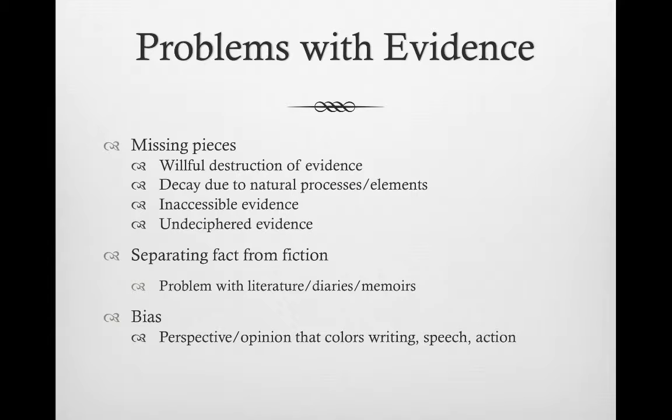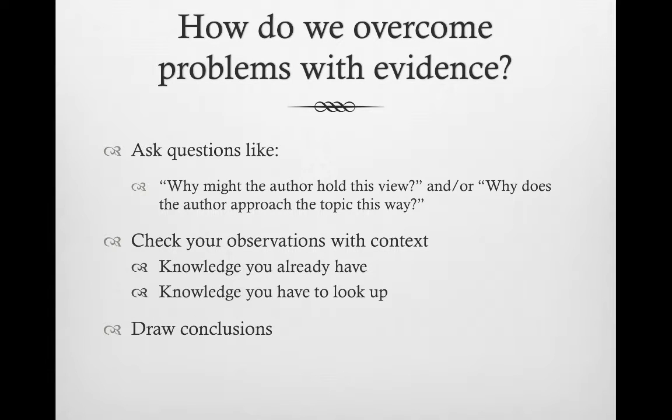Other problems you might have with evidence include separating fact from fiction, which is particularly problematic for literature, diaries, and memoirs, all of which might be altered for artistic license or to depict someone in a better light. Bias is another problem. Bias is a perspective or opinion that influences writing, speech, and action, and can drastically affect the way the document is created and how we interpret it. You can start by asking questions about your source that might help clarify things, like why might the author hold this view, or why does the author approach the topic this way. These questions are very helpful in determining bias.